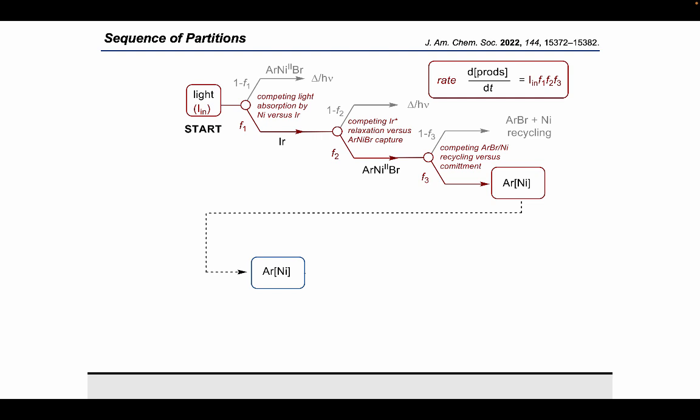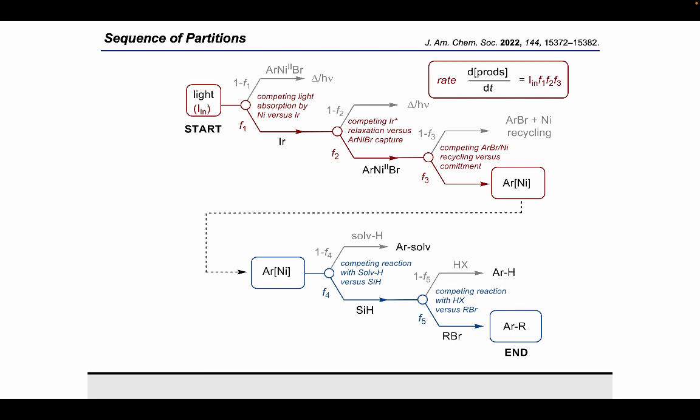And now we've got the second part of the reaction process, which is decoupled from the rate-determining steps. These are the partition-determining sequences. Once that aryl-nickel species has been taken off the rate-determining cycle, it can either react with solvent to form solvent-coupled product or be carried forward reacting with the silane. And then it can either pick up a proton from somewhere in solution or react with the alkyl bromide to make the desired cross-coupled product. And the selectivity is going to be determined by these last two steps.